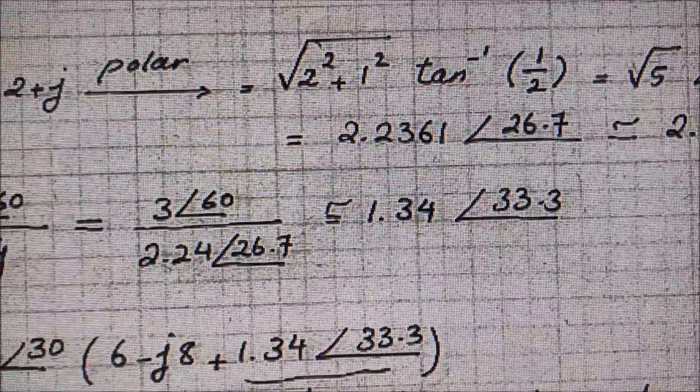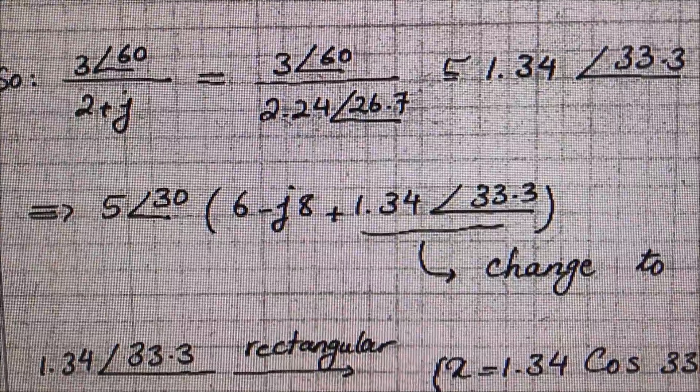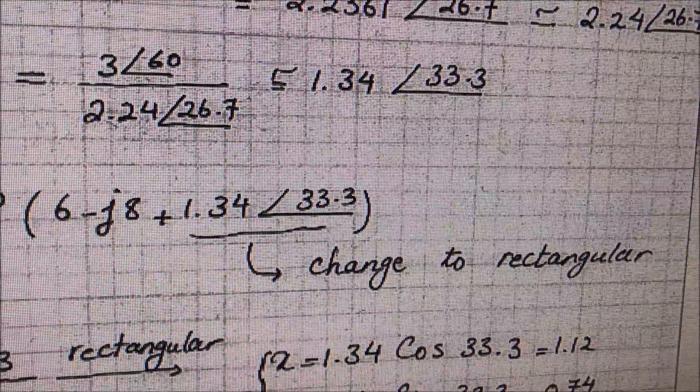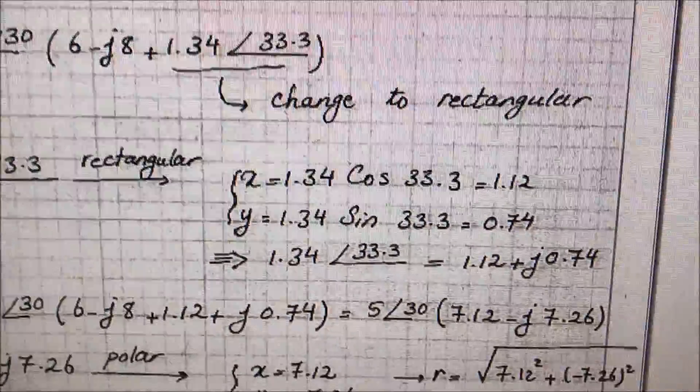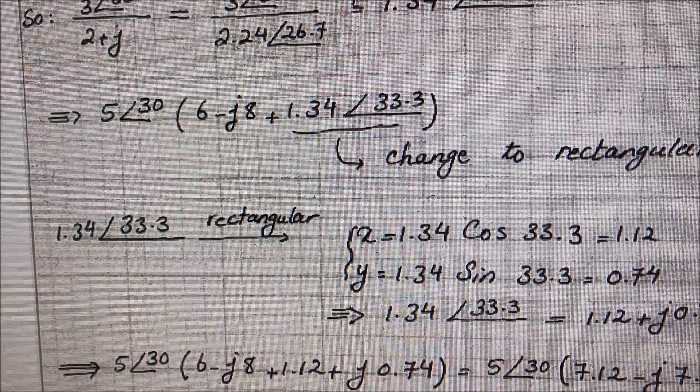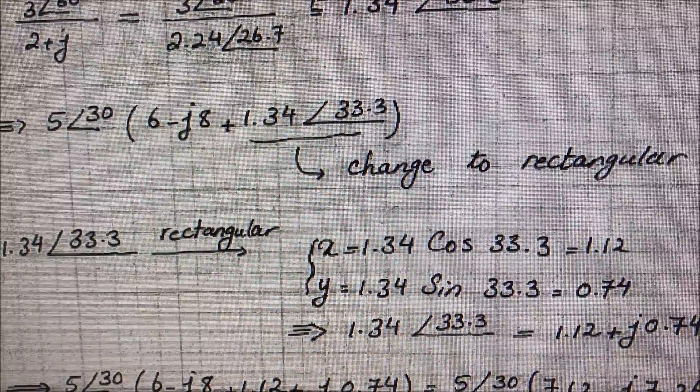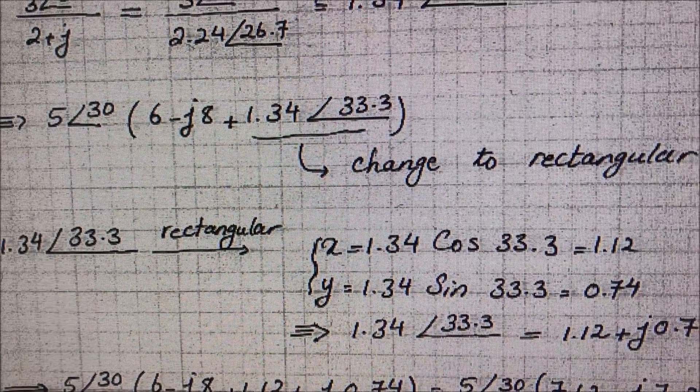Now in the parentheses, the answer that you just got, you're going to convert it back to rectangular. To do rectangular, it's as easy as just doing 1.34 cosine 33.3 to get you the x, and 1.34 sine 33.3 to get you the y.